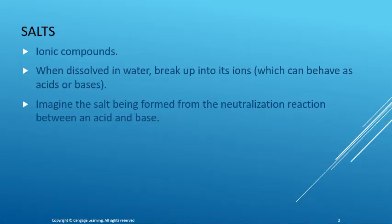By definition, a salt is an ionic compound. When dissolved in water, it will break up into its ions, which can behave as acids or bases if it is coming from a weak acid or a weak base. You can imagine the salt being formed from the neutralization reaction between an acid HA and a base BOH, producing a salt BA — the metal cation from the base with the anion coming from the acid, positive first, negative second — and water.